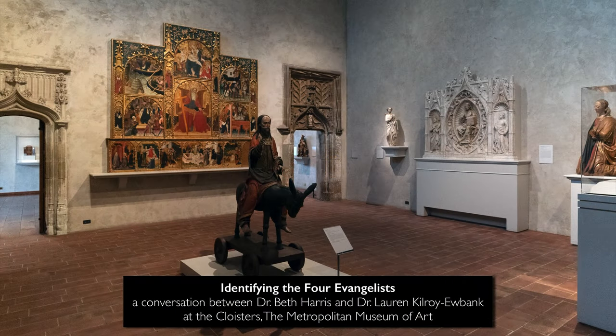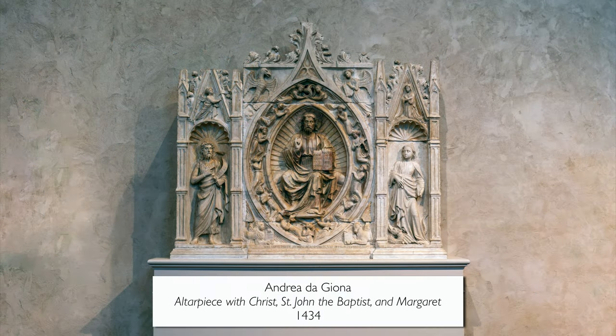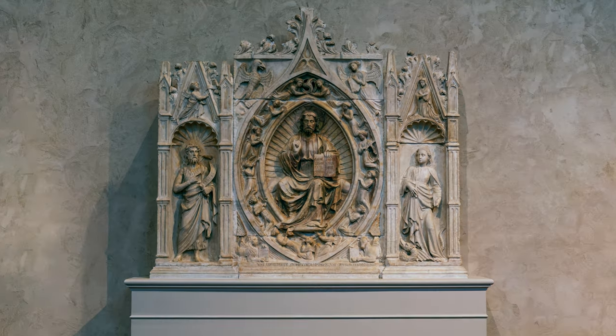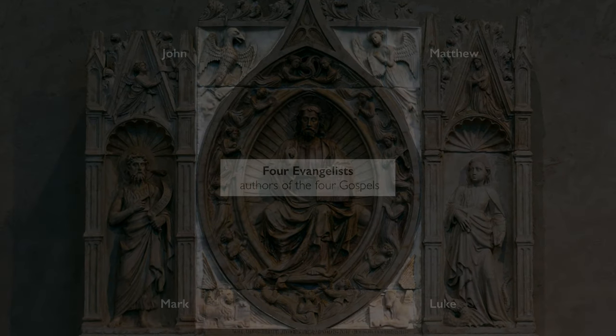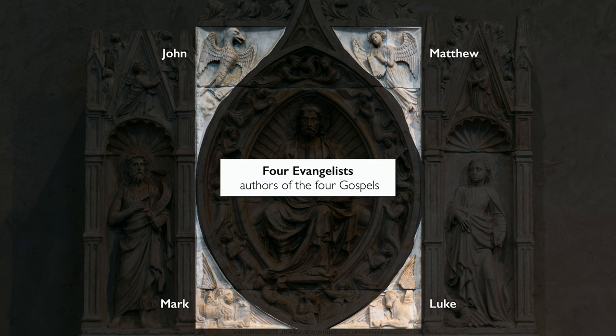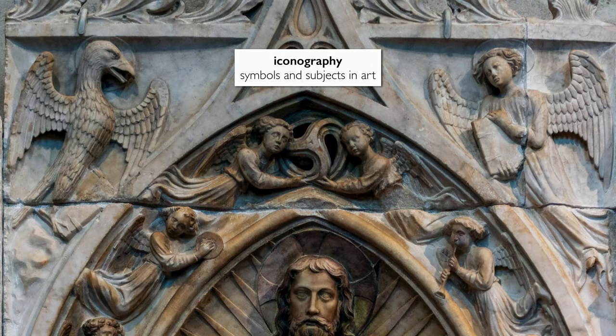We're in the Cloisters, which is part of the Metropolitan Museum of Art, and we're looking at a marble altarpiece from the 15th century in Italy. We wanted to talk about the symbols of the four evangelists, because they appear so often in art history, it's useful to be able to recognize them. We thought it would be useful to not just identify them with their iconographic motifs, but also to explain how those motifs developed.